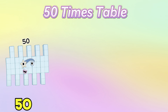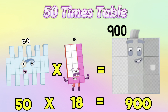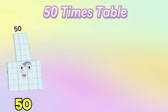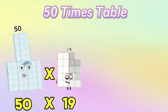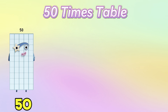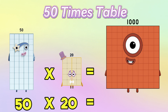50 multiplied by 18 is equal to 900. 50 multiplied by 19 is equal to 950. And lastly, 50 multiplied by 20 is equal to 1000.